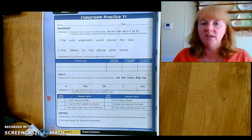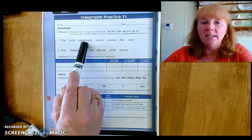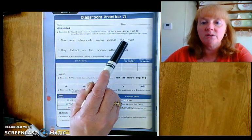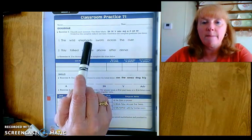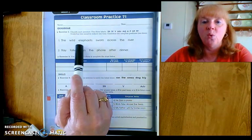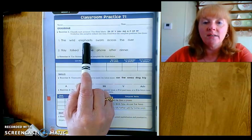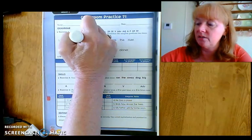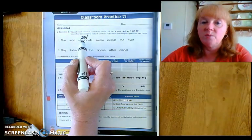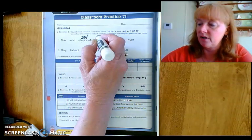So let's read number one and then ask our first question. The wild elephants swam across the river. Are we going to say who or what? We're going to say what. And what are they doing? So what swam? Elephants. Subject noun. What is being said about elephants? Elephants swam. Verb.